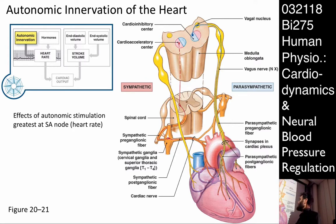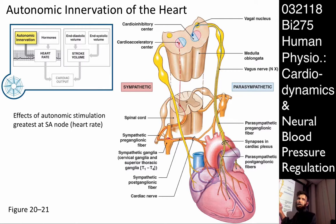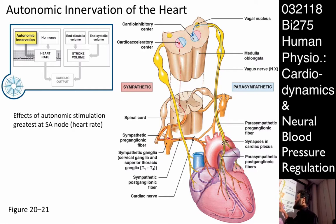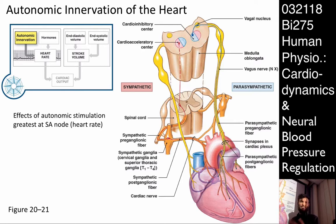Parasympathetic synapses happen paramurally — right on the surface of the organ they're innervating. The sympathetic synapse comes out of the sympathetic chain ganglia through the cardiac nerve and comes into contact with the conduction system of the heart, able to accelerate the rate of depolarization and thus the beating of the heart. We'll see how that works exactly in a bit.